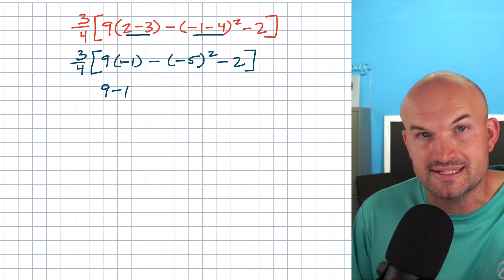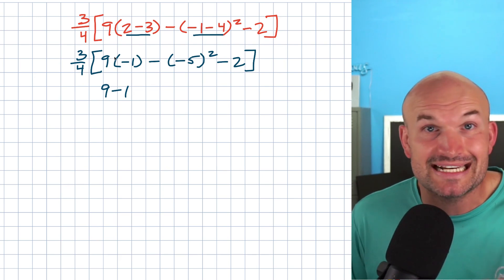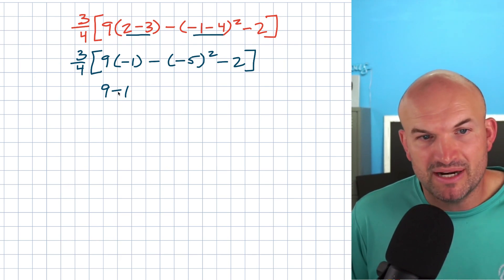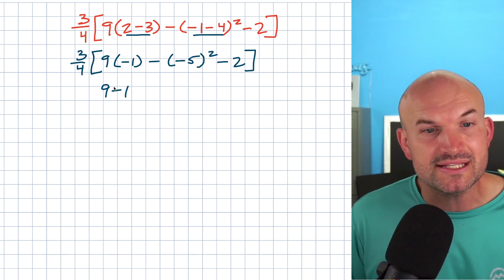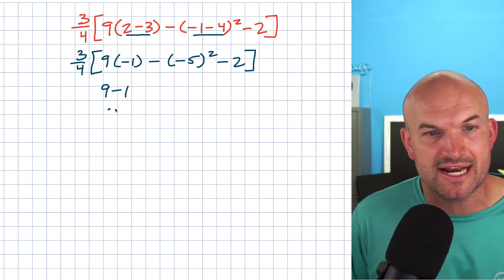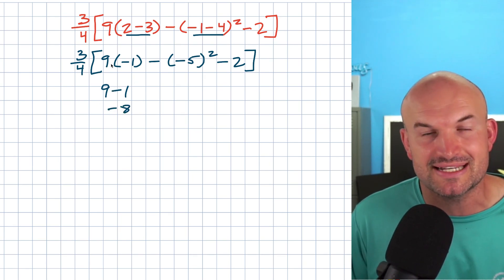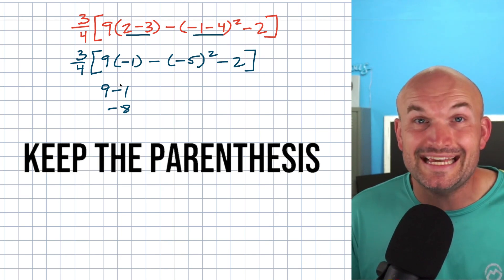Because when I have nine parentheses negative one, that is understood as nine times a negative one. But if you write it with no parentheses, that's nine minus negative one, which is negative eight — which is not the same as nine times negative one, which is negative nine.